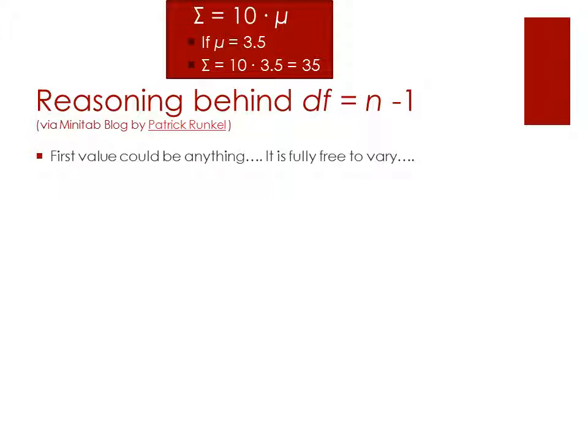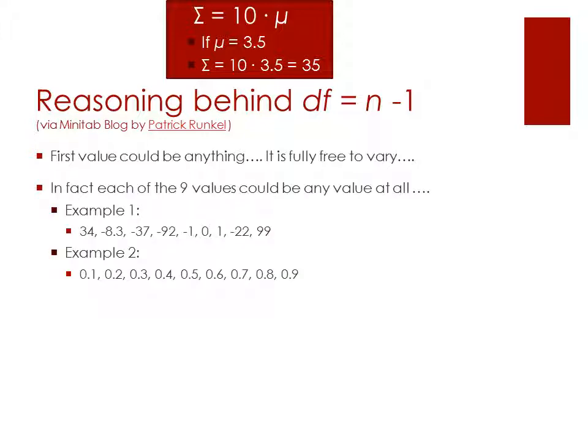So let's take a look at how this plays out in actual numbers. Keep in mind, we've got our sample. The first value could be anything. It's fully free to vary. It can be any value whatsoever. So here's two examples, both of these would work. And keep in mind, in our problem, we would say that each of the nine values could be any value at all. They are fully free to vary.